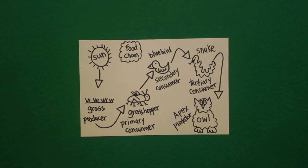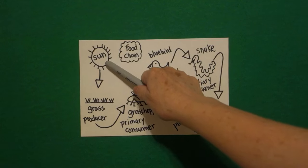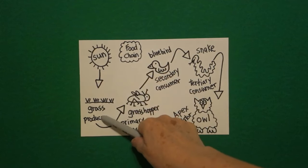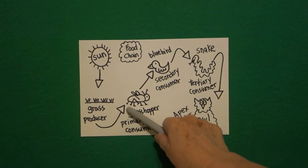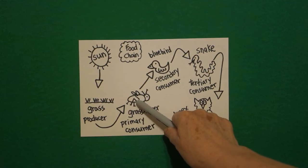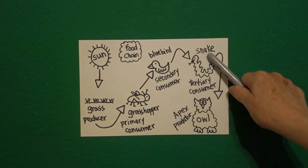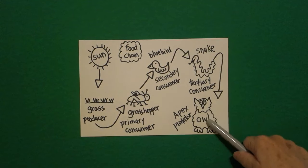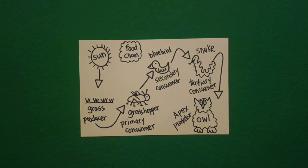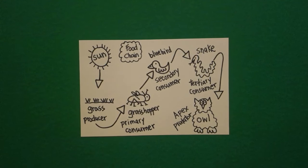So you should have sun to grass, to grasshopper, to bluebird, to snake, to owl. And don't forget to label this food chain — that's what we're making today, a food chain. Alright, let's see how we're going to color this in.